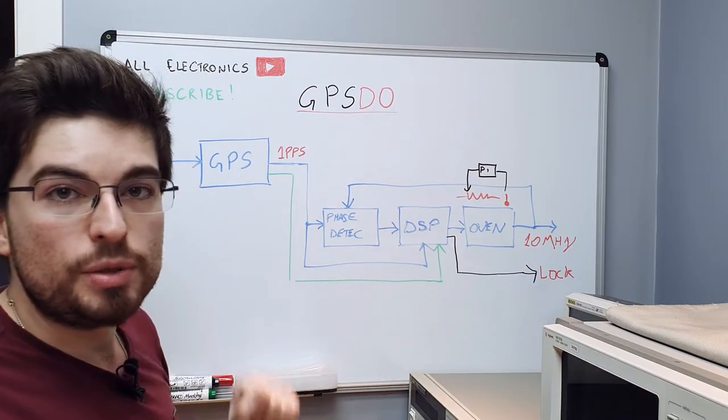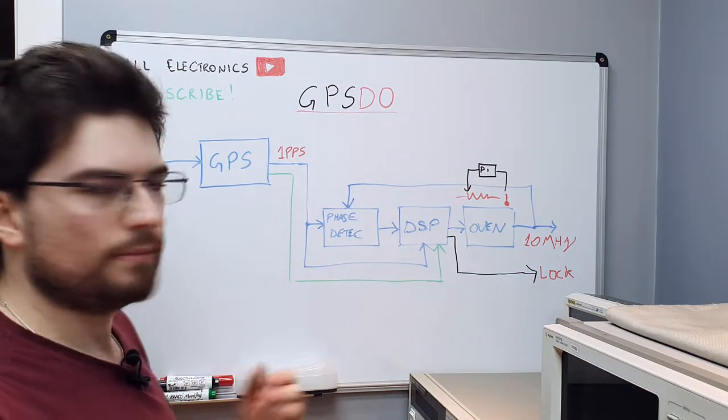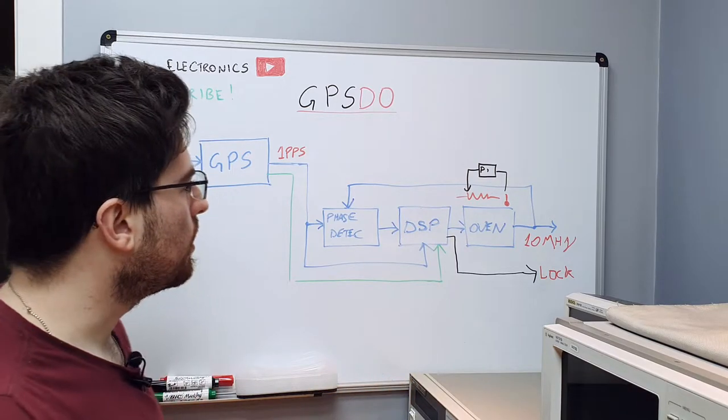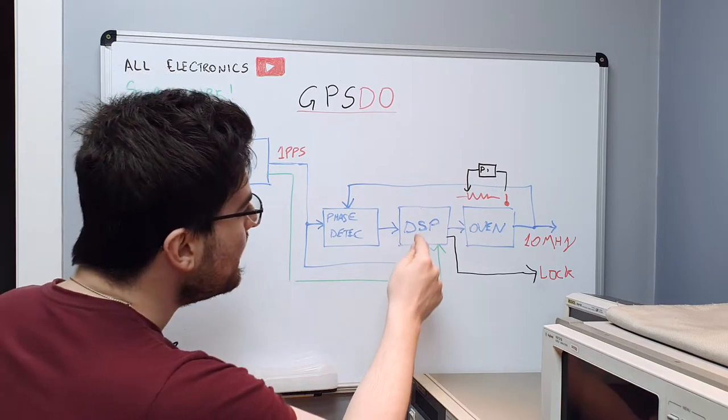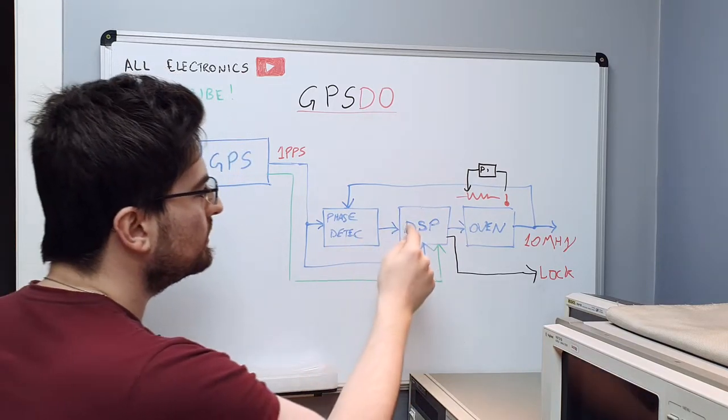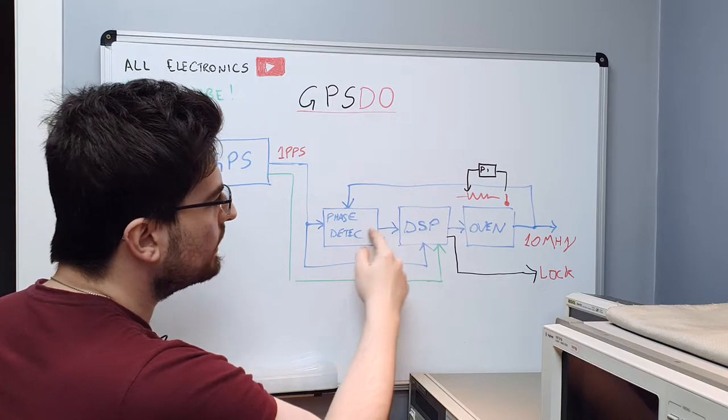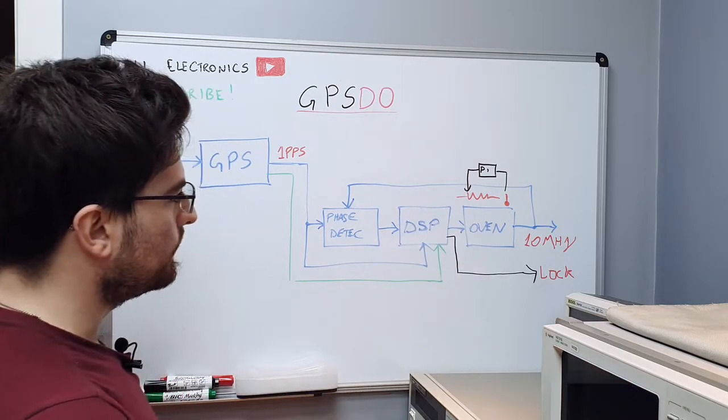The main difference we can see here on a GPS disciplining oscillator from the PLL is that they have a DSP block on the center between the phase detector and the oscillator. On a PLL here,